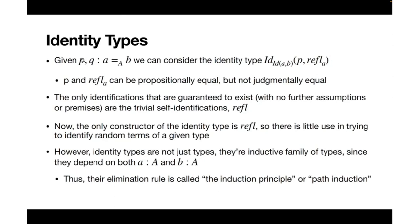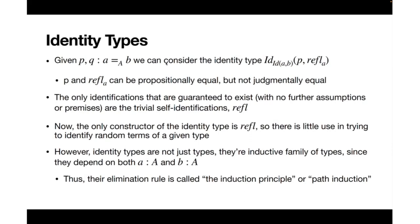Something that was considered a rather useless thing in Martin-Löf type theory is that given two proofs P and Q that a and b are equal, we can consider the identity type of these proofs — for example, the identity type stating that P is identical to reflexivity of a. Here P and refl(a) can be propositionally equal, meaning the identity type has some terms, but they're not necessarily judgmentally equal.